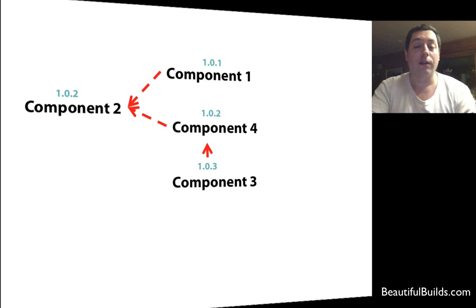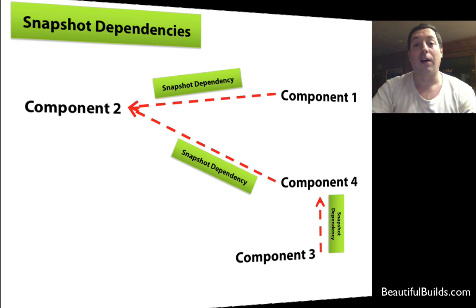So we might end up with, at deployment time, with component one, version 1.0.2, and the other components, version one, two, and three. And that's just hell, just recognizing all that and testing all the components with those specific versions. That's really, really complicated. And this is where snapshot dependencies come to our rescue.